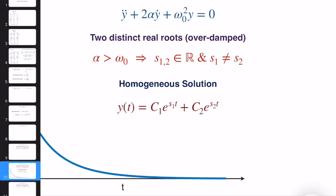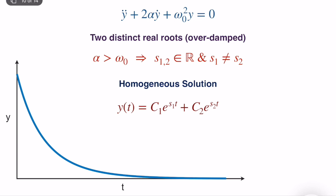Once we compute C1 and C2, we can plot the graph. For a given C1, C2 combination, the output starts from the initial condition and exponentially approaches zero as time goes to infinity. At steady state, everything goes to zero since there is no input. Depending on C1 and C2, you can get different behaviors near t=0, but eventually the response is dominated by the slowest pole, giving a first-order exponential decaying behavior.